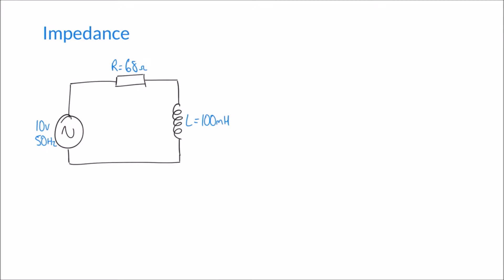We have an inductor with an inductance of 100 millihenries, and we're going to calculate its reactance. The formula for the reactance of an inductor is XL = 2πfL — two pi times the frequency times the inductance. Calculating that: 2π × 50 (our supply frequency) × 100 millihenries (100 × 10⁻³) gives a reactance of 31.42 ohms.